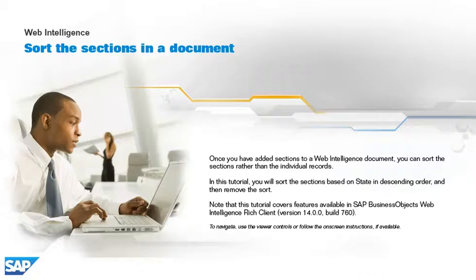Once you have added sections to a web intelligence document, you can sort the sections rather than the individual records. In this tutorial, you will sort the sections based on state, in descending order, and then remove the sort.